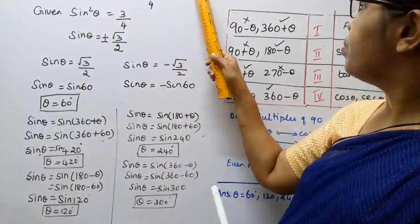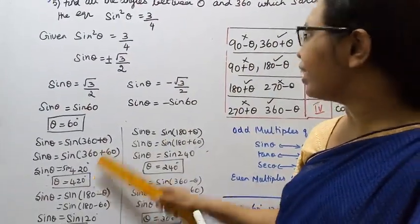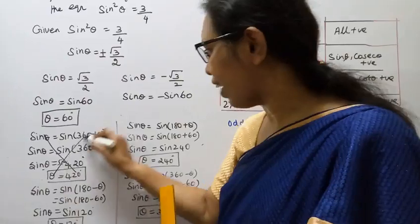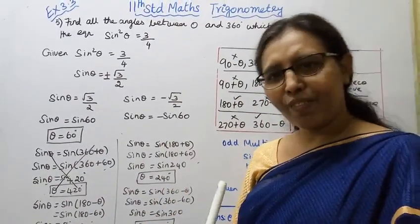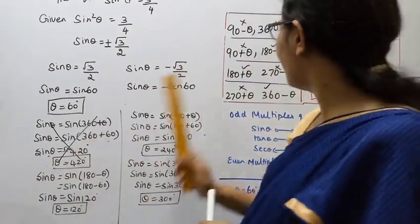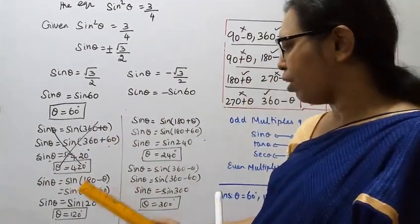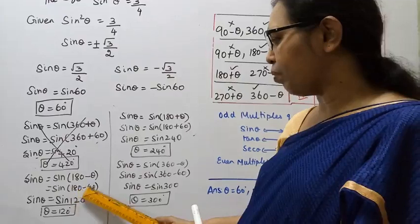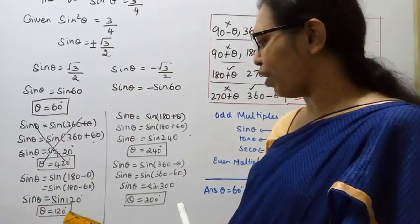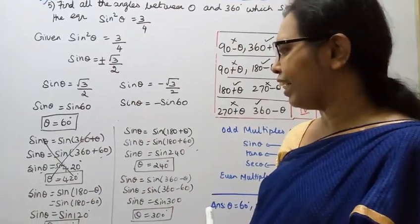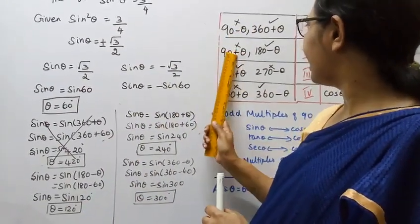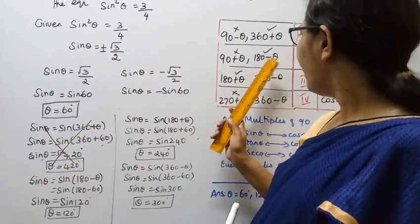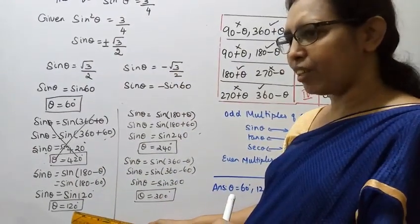We need to find all angles between 0 and 360. Since 420 is outside the range, we use 180 minus theta: 180 minus 60 equal to 120 degrees. This value of 120 is between 0 and 360, so it is valid. Therefore theta equal to 120 degrees.